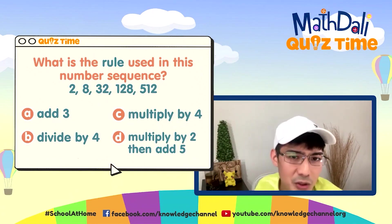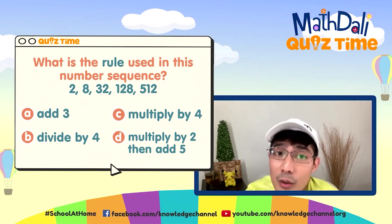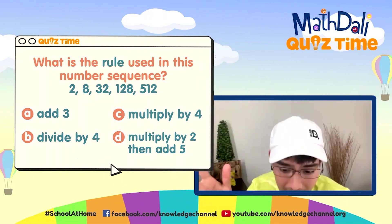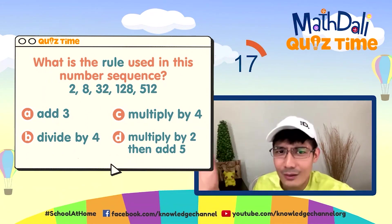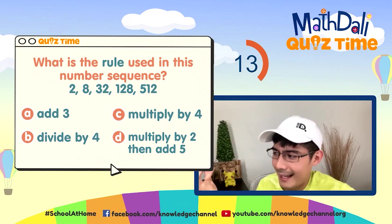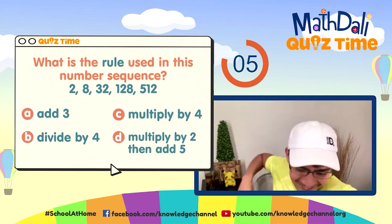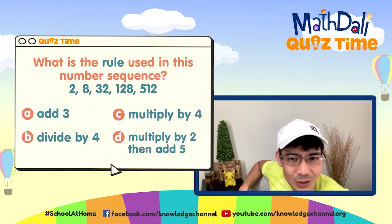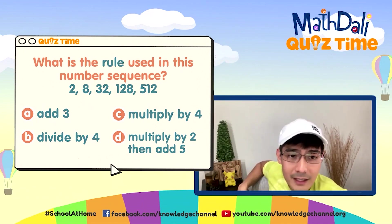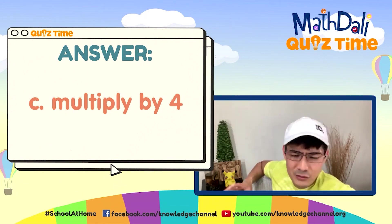Fourth question: What is the rule used in this number sequence? Is it A — add 3, B — divide by 4, C — multiply by 4, or D — multiply by 2 then add 5? 20 seconds. Ang tamang sagot ay letter C — multiply by 4. Para makakuha tayo nang mga susunod na terms natin, magmumultiply tayo ng 4.